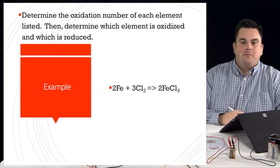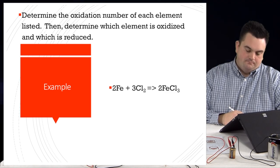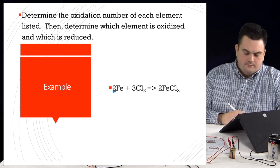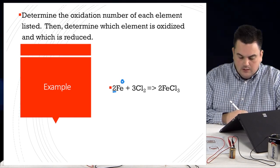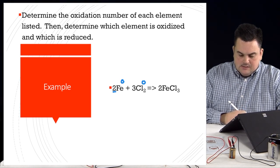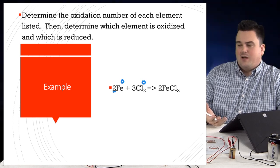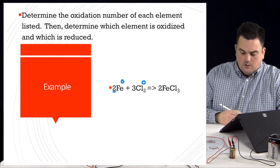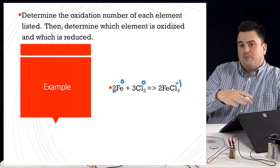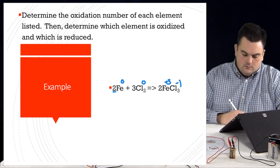Let's do an example. Determine the oxidation number of each element listed, then determine which is oxidized and which is reduced. On the left: iron (2 Fe) — the coefficient doesn't matter, just the element, so its oxidation state is zero. Cl2 is diatomic but still an element, so also zero. On the right, it's a compound that must add up to zero. Iron has two possible oxidation states — plus two or plus three — so skip it. Chlorine is negative in this compound, and the only negative value is negative one. With three chlorines, the total is negative three.